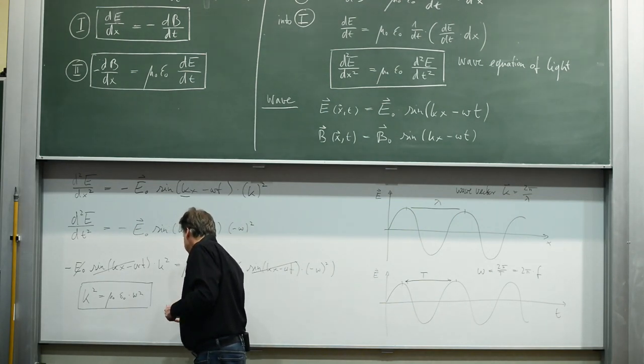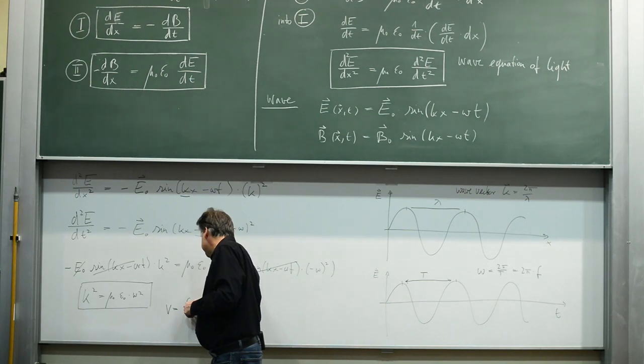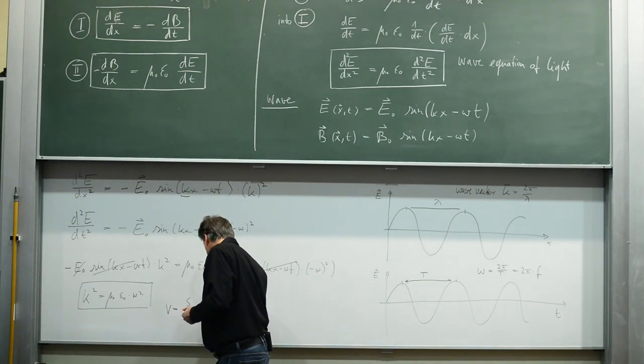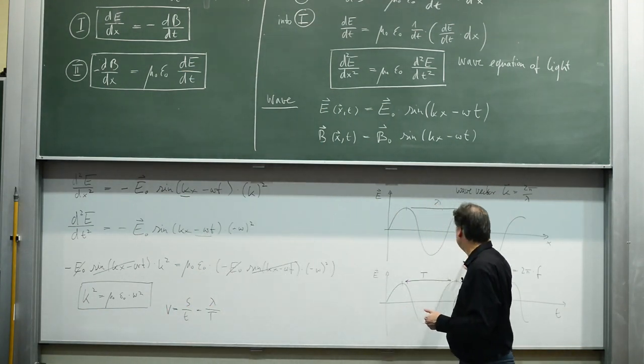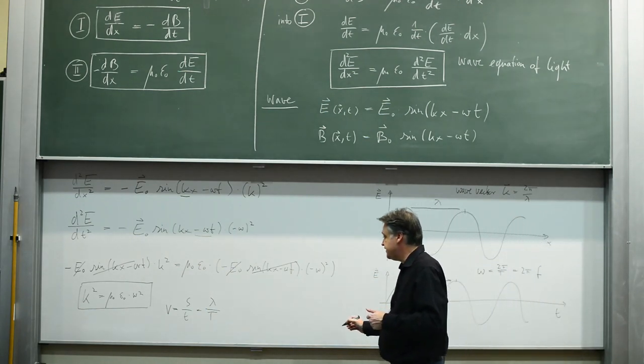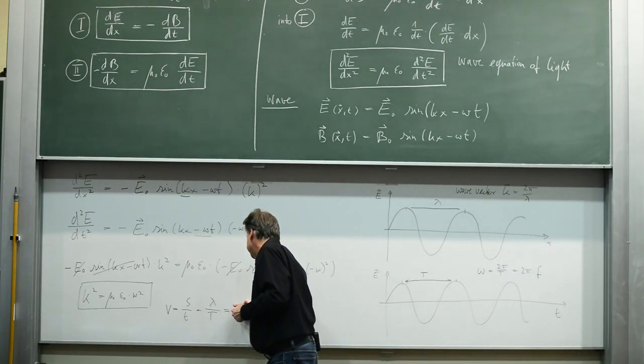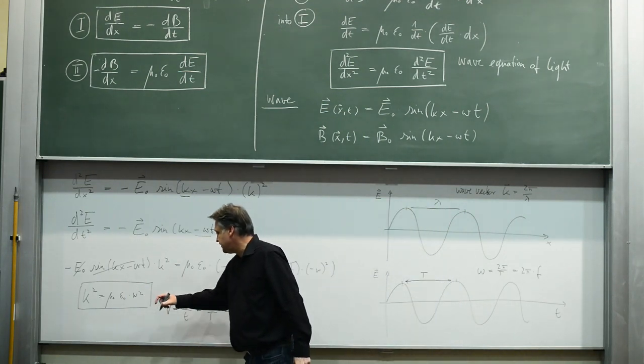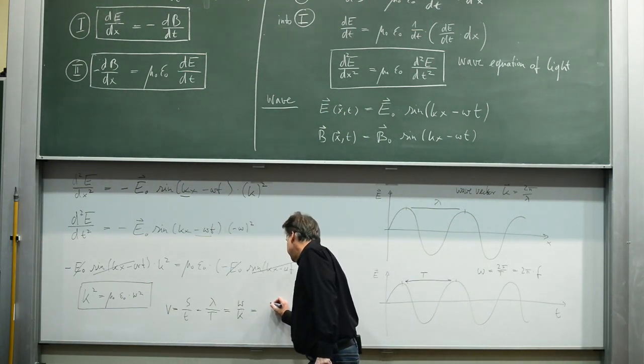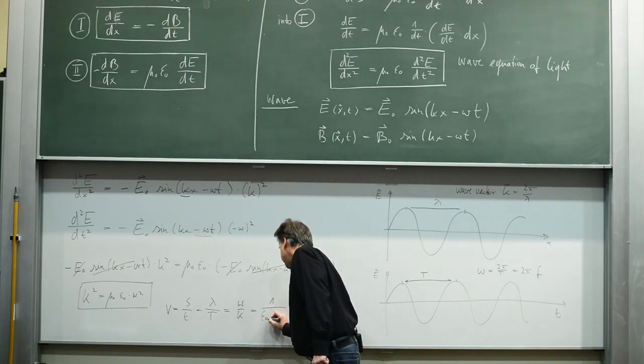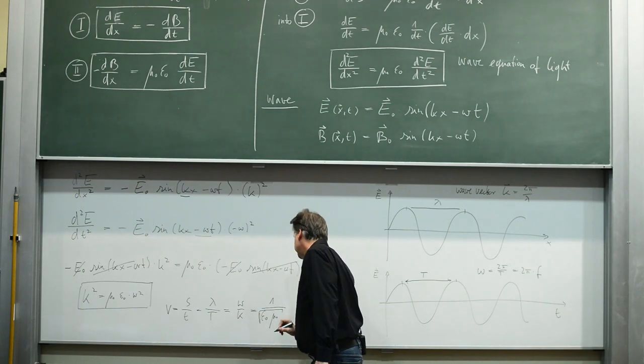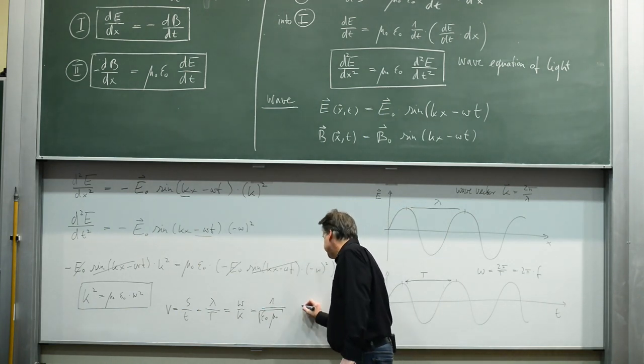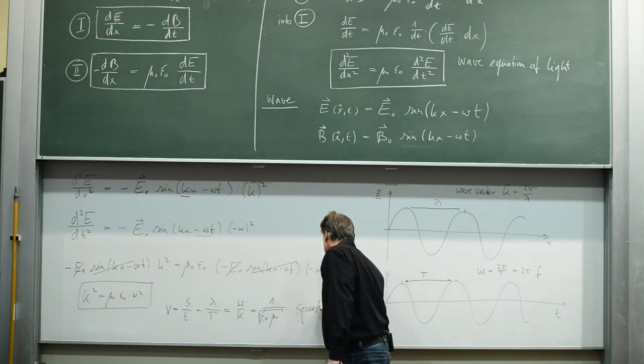Already at that stage we have proven that our assumption of the electric field being a wave perfectly works. This is indeed our solution for the wave function. A velocity is defined as distance over time, or in our case lambda over capital T for one full oscillation. That could be rewritten as omega over k. If we sort that expression properly, you realize that this is one divided by epsilon0 mu0 square root. This is our speed of light.